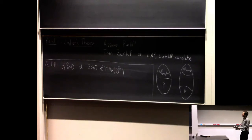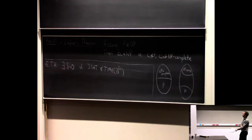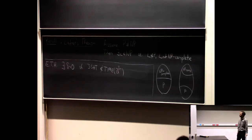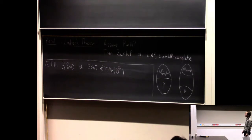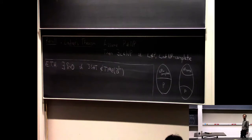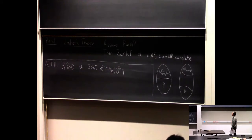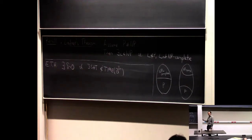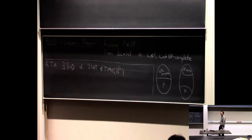Good morning. Today we're going to prove two theorems in complexity theory. I feel like we've been doing a lot of definitions and explanations and setup, and today's actually going to be a little bit different. We're just going to prove two theorems. Both are kind of classics in complexity theory — the kind of stuff that was being done in the 70s and 80s. So it's a little bit retro.